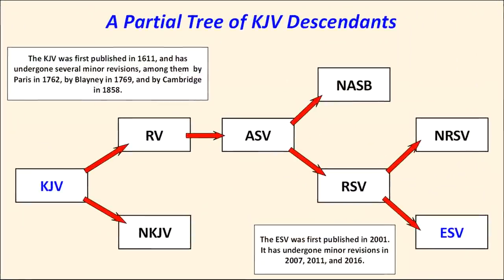Here's a family tree chart showing some of the translations descended from the KJV. The KJV is the great-great-grandparent of the ESV based on the generations shown here. Both are in the Tyndale tradition. Some say the ESV is not in the Tyndale tradition because its New Testament is not based on the Textus Receptus, but based on the style of its English prose, the connection of the ESV to Tyndale seems clear.